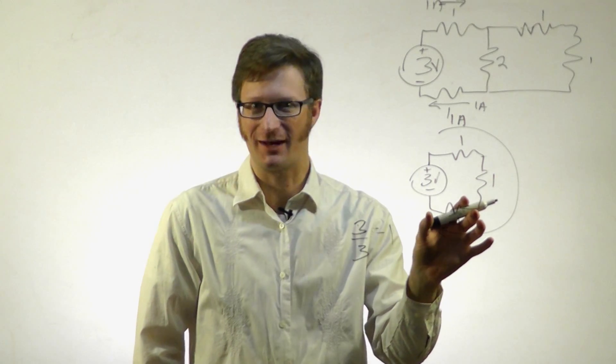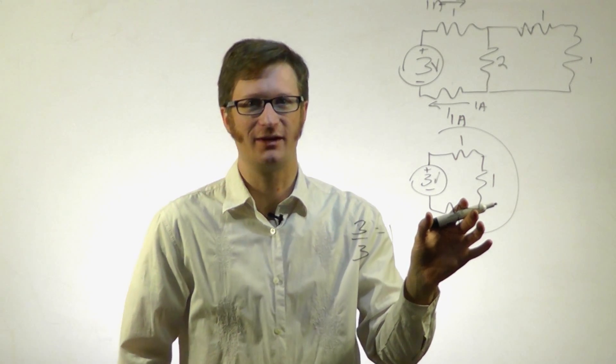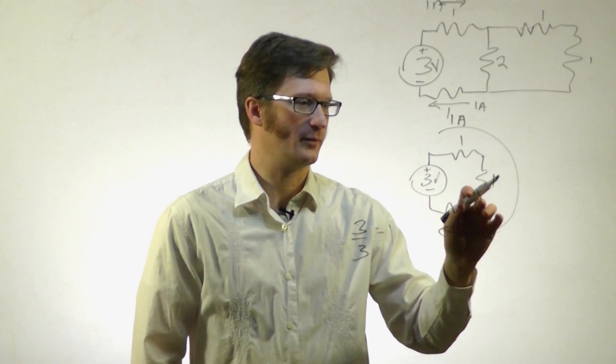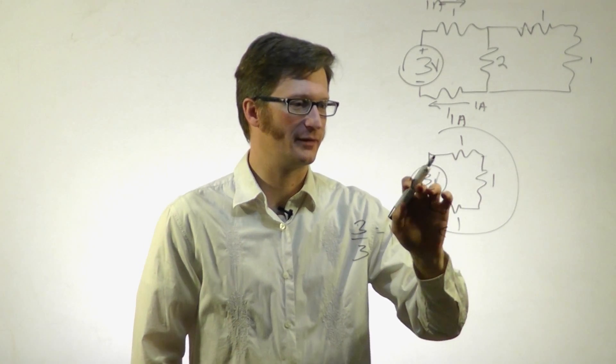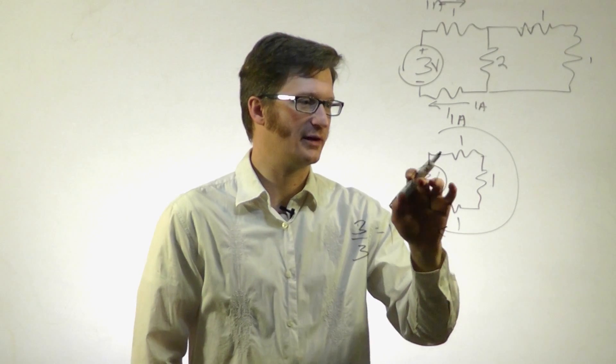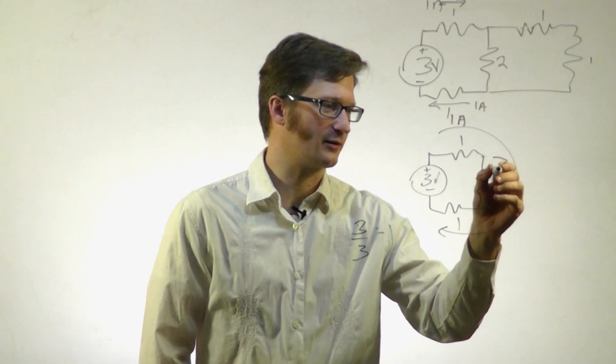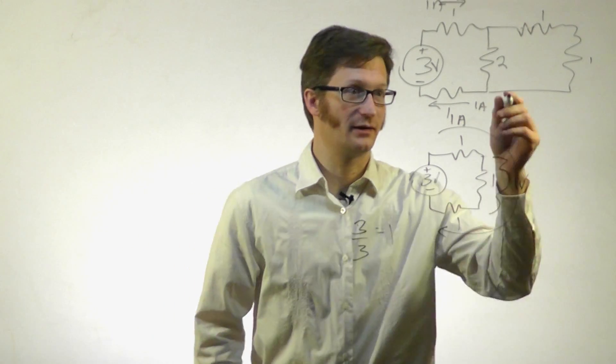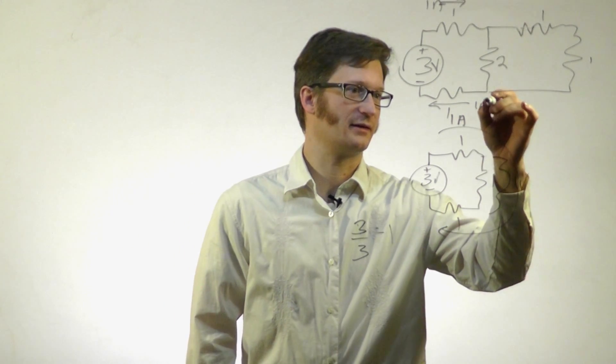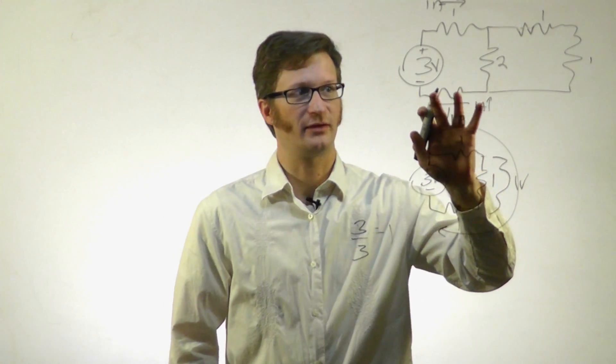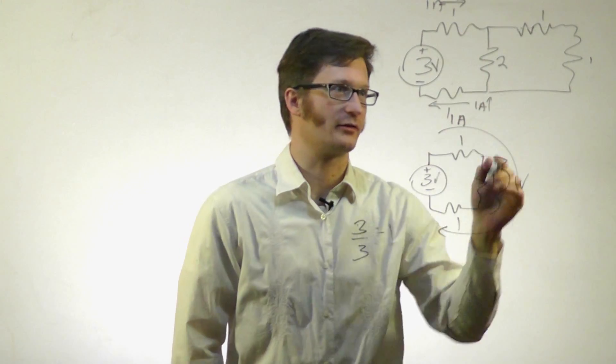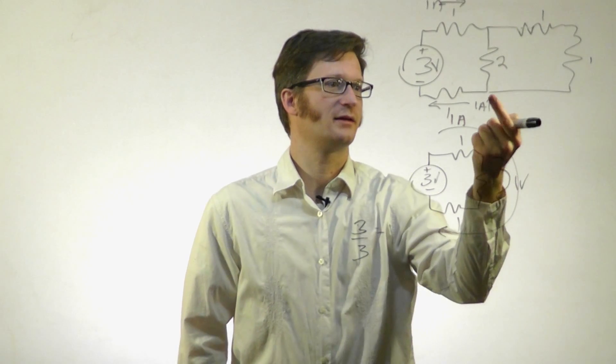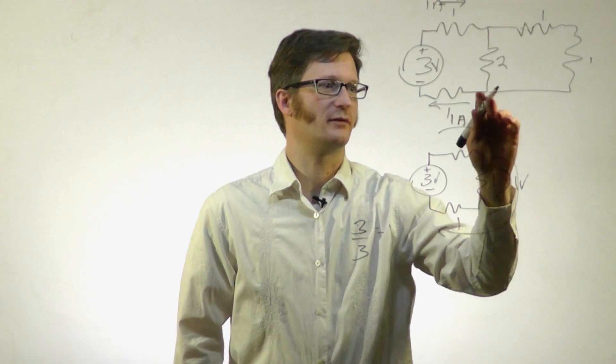Likewise, if I have 1 amp going through a 1 ohm resistor here, I also have 1 volt dropped. I've subtracted a volt from the 3 volts here and another volt here, so that leaves us 1 volt across here. That applies to this circuit too, because we still have a volt dropped here and a volt dropped here. From this point to that point, we have 1 volt.